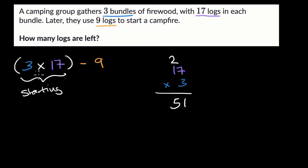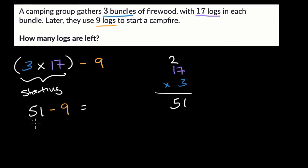So we get 51. The starting amount is 51. And then from that, we are going to subtract nine. My head would say: if I did 51 minus 10, it would be 41. But I'm subtracting one less than that, so this is going to be 42.